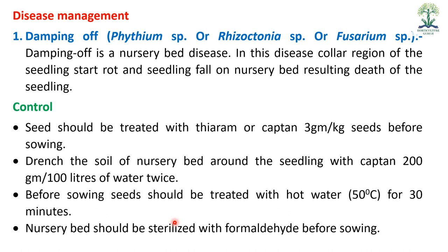Disease management: Damping off — caused by Pythium species, Rhizoctonia species, and Fusarium oxysporum. This disease mainly shows up in the nursery bed — the stem at soil level rots, causing seedlings to fall and die. Control: Seeds should be treated with thiram and captan at 3 grams per kg seed before sowing.